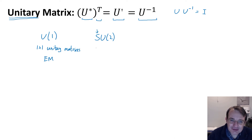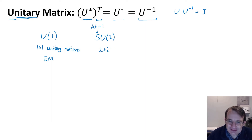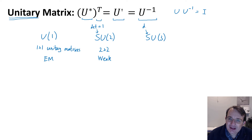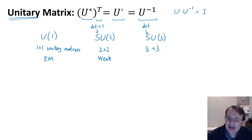Another symmetry particularly useful for the standard model is called SU(2) — the Special Unitary group of 2×2 matrices. The 'special' means the determinant has to equal one. So these are 2×2 unitary matrices with determinant one, and this turns out to be useful for representing the symmetry of the weak interactions.